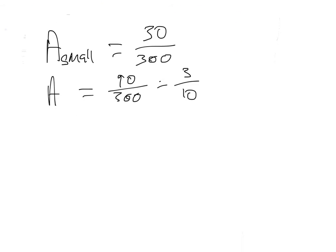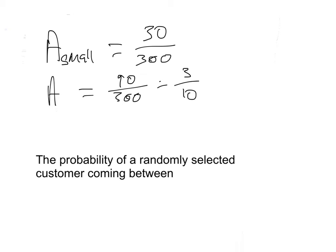We divide them both by 10, which is 9 over 30, divide them both by 3, which is 3 over 10. So, the answer - remember that the area is the probability. The probability of a randomly selected customer coming between 6 and 7 is 0.3. And there's our answer to the question. Now we're going to have a look at another way of doing the same problem.